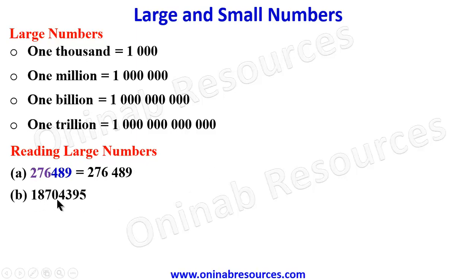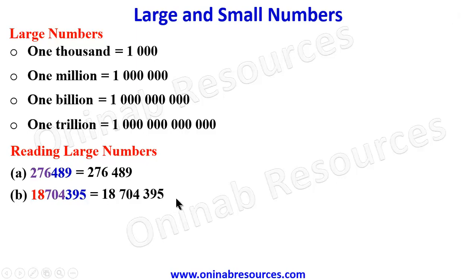For our next number, we again group into threes from the right: three-nine-five, then seven-zero-four, and the remaining digits are eighteen — not a full group of three. Separating them we have: eighteen, space, seven-zero-four, space, three-nine-five. Since we have two full groups of three, this is in the millions — eighteen million seven hundred and four thousand three hundred and ninety-five.